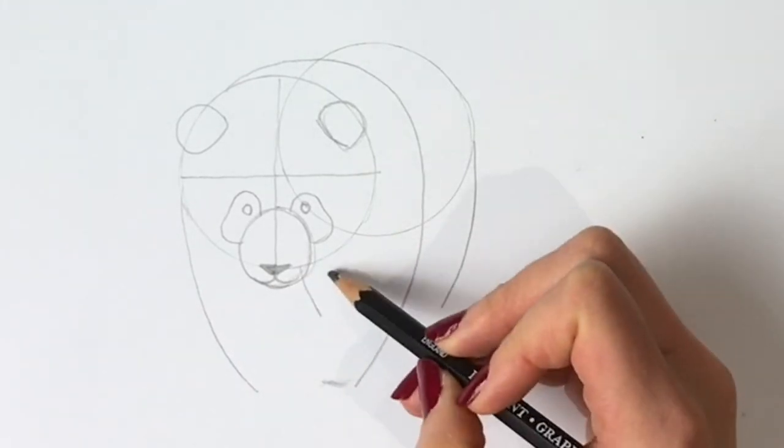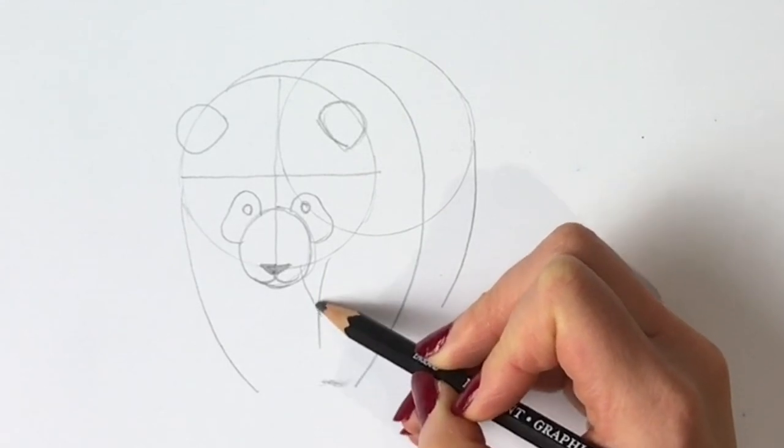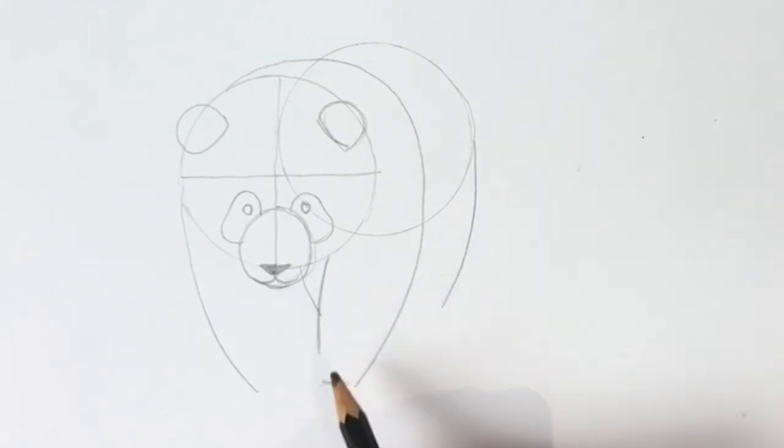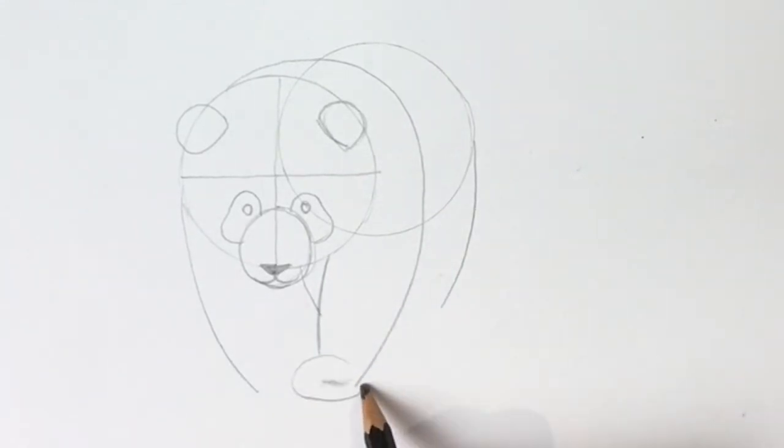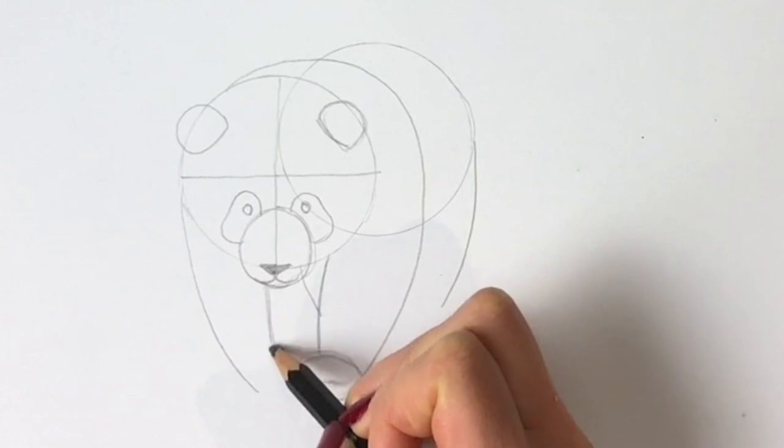Now for the leg just bring a line coming down here and then a foot, and then the same on the other side, a line coming down.